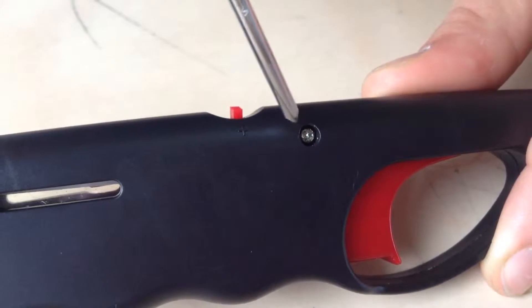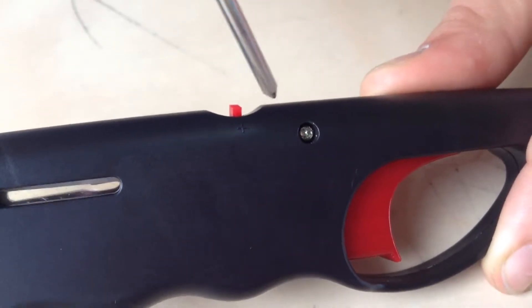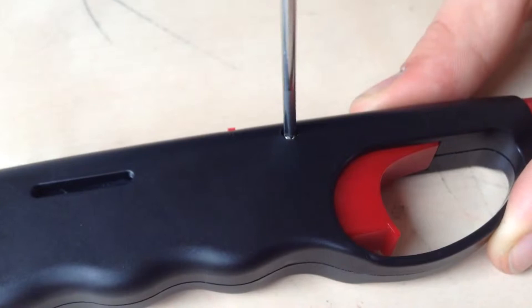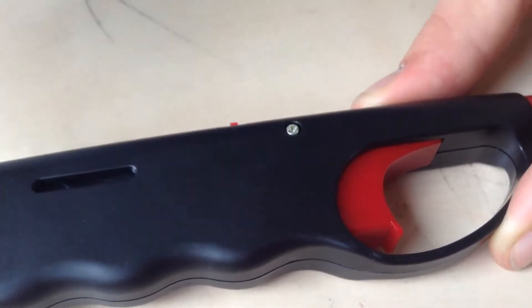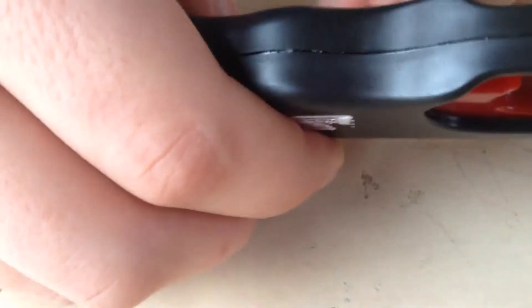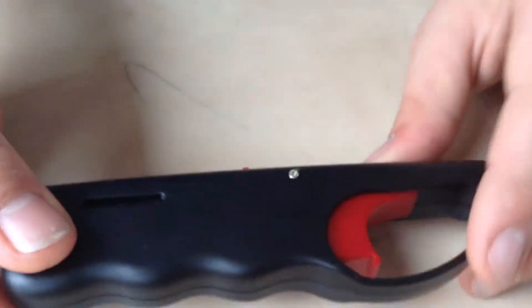Alright, this screw right there, we need to unscrew it because that's the main screw. Once it's unscrewed, you can turn it over and try to get it out, but it may not come out, so it doesn't really matter.